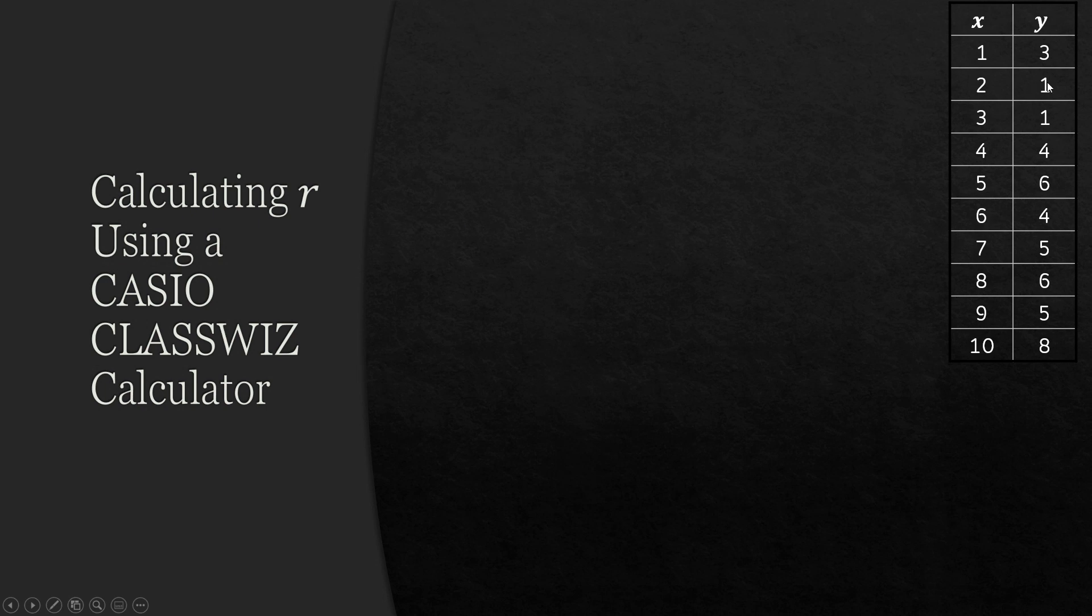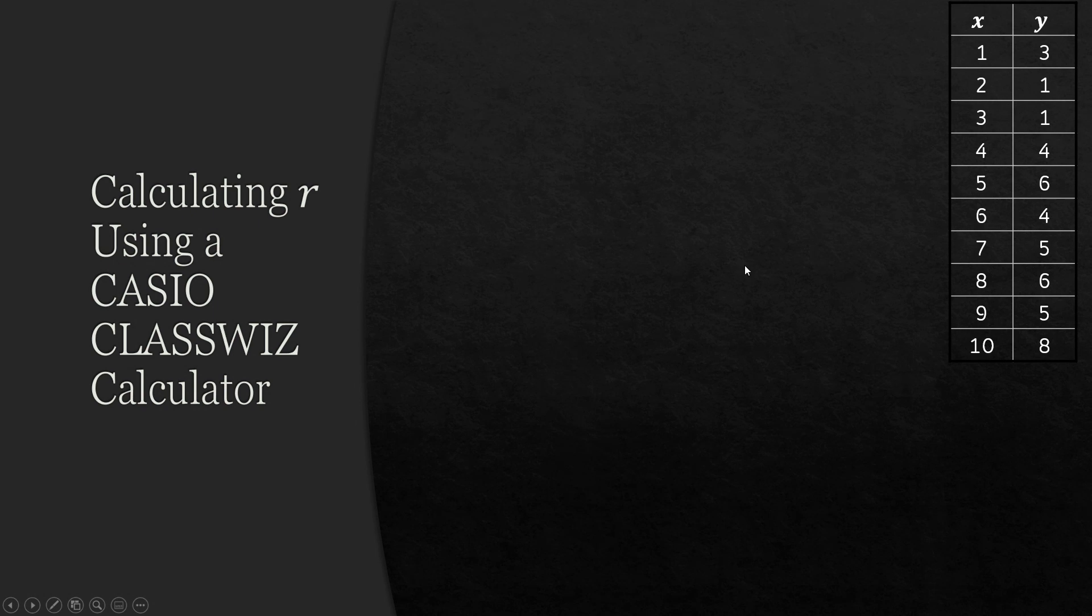Here's the data I'm going to use. It's 10 pairs of values. If we put them on a scatter graph this is what it looks like. Now we can see there's positive correlation here. I'd say this was quite strong positive correlation as well.